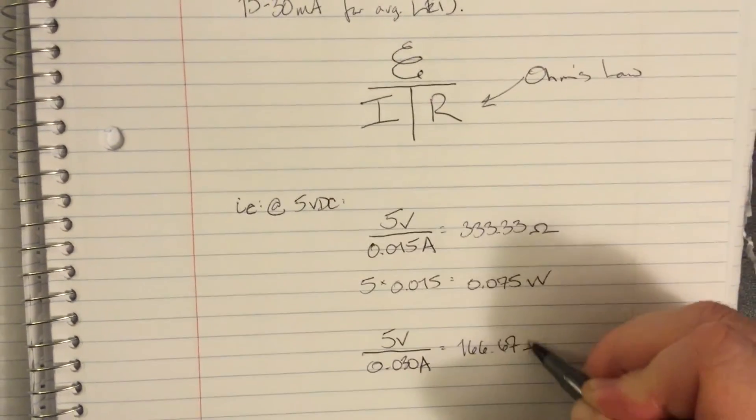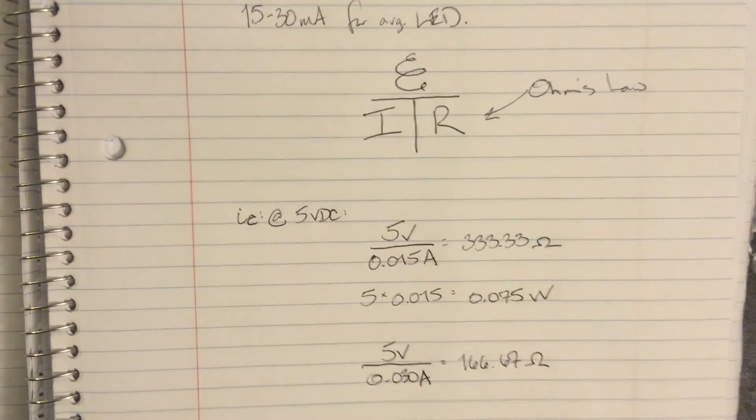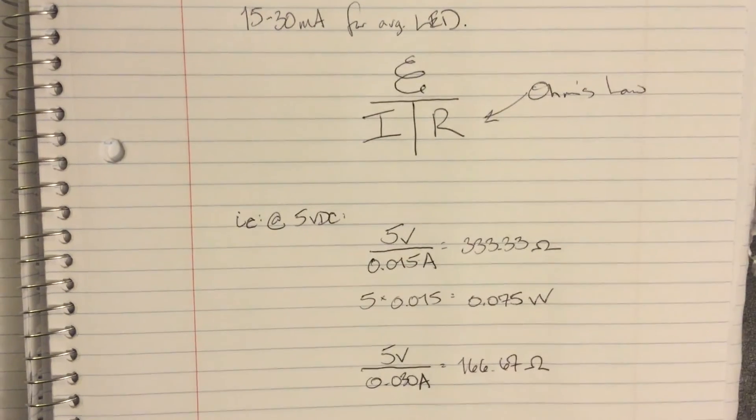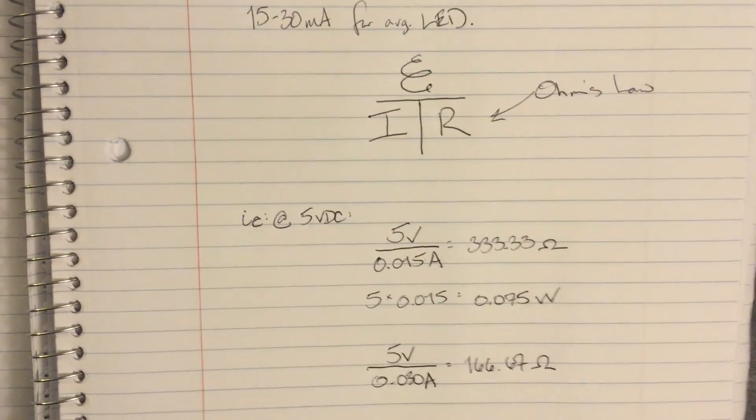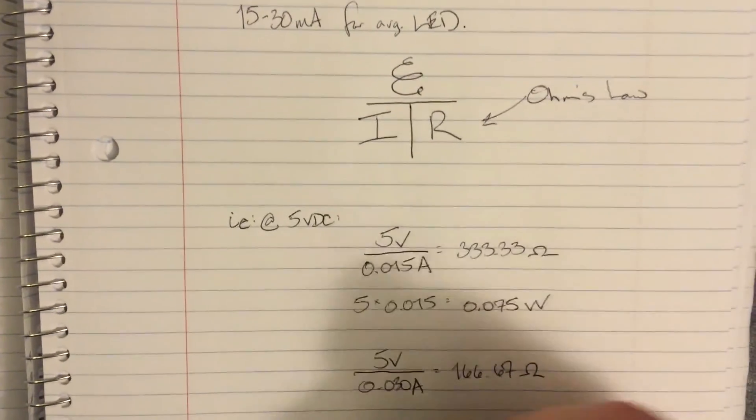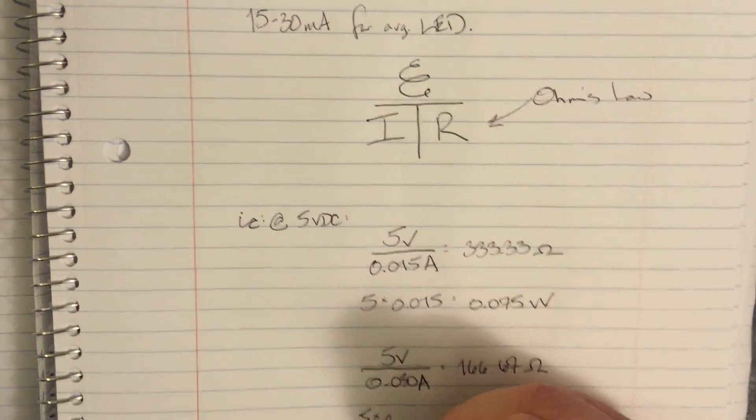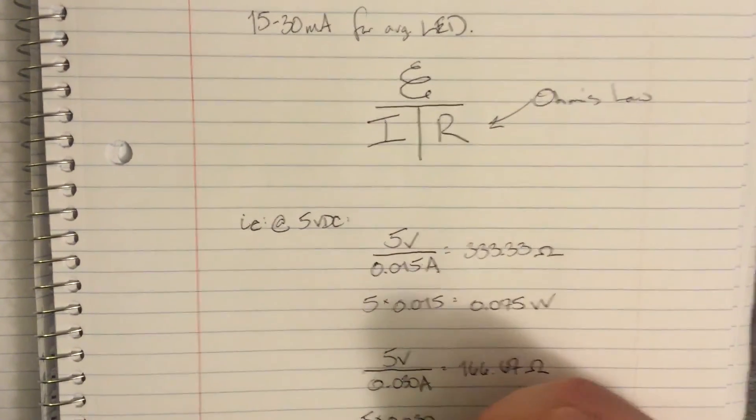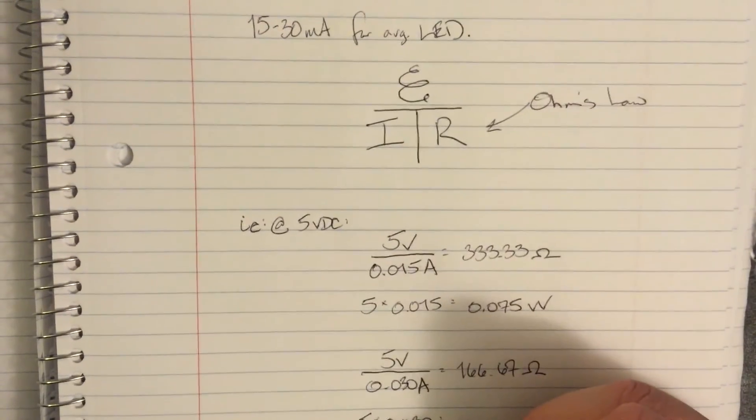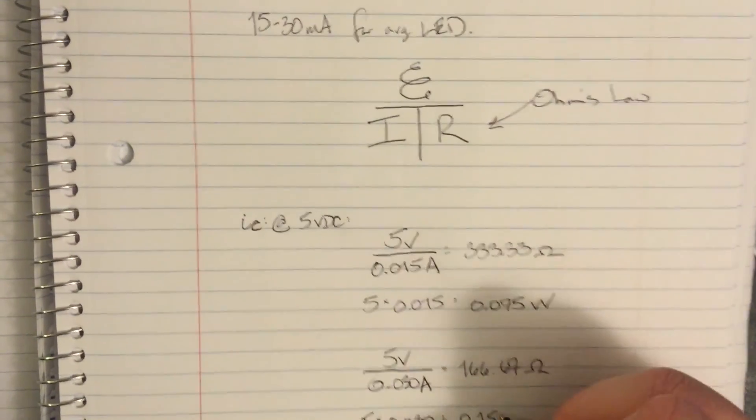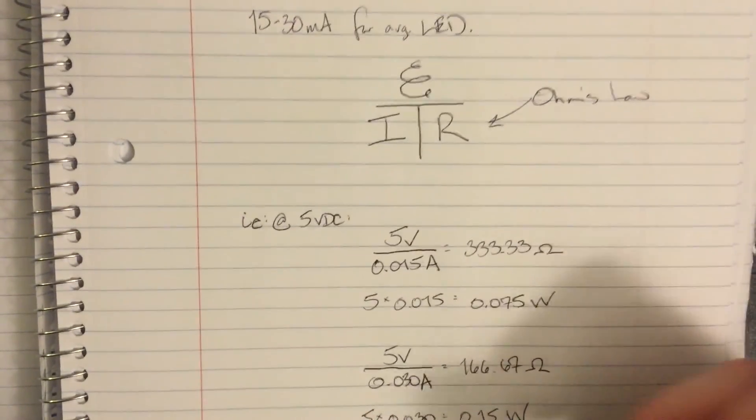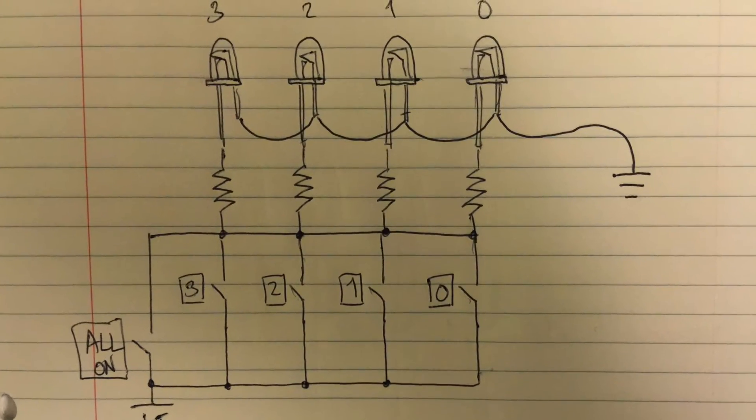But then I'll calculate 5 over 30 milliamps or 5 over .030 amps and get 166.67 or 167 ohms. So now I know anything between 330 or 167 ohms is going to work, and probably somewhere in the neighborhood of 250 ohms is going to be best. Quarter watts is going to be perfectly safe to use, and I have my resistor for an LED at 5 volts.